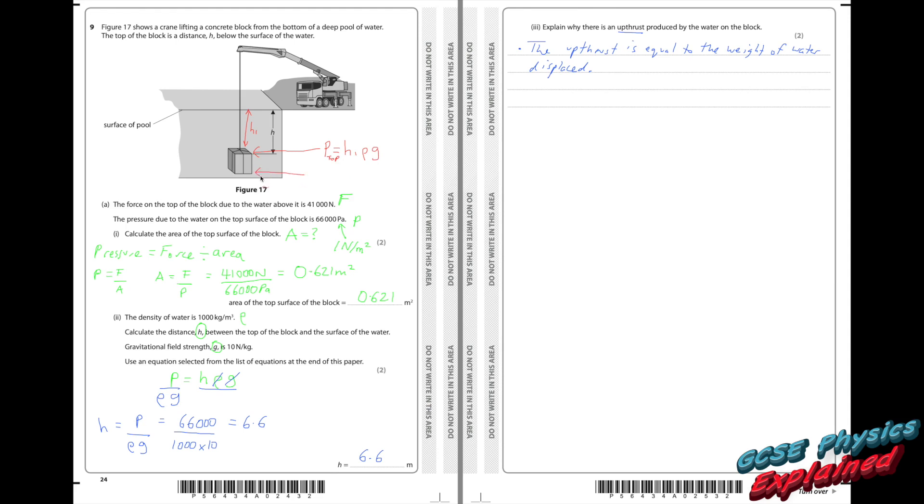Now, there's also a pressure at the bottom of the object. Pressure on the bottom of the object. And that, if I call this H2, height 2, that's going to be height 2, times by the density of the liquid, times by the gravitational field strength. Now, you can see what's going to happen. H2 is bigger than H1. So the pressure at the bottom is going to be bigger than the pressure at the top.